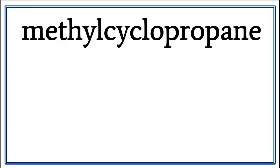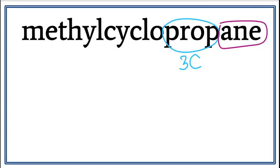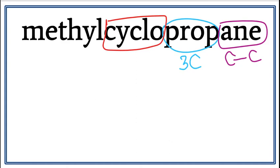Let's draw the structure for methylcyclopropane. 'Prop' tells us that there are three carbons in the longest carbon chain. 'Ane' tells us that this is an alkane, meaning that there are only single bonds between carbons. We see the word 'cyclo,' meaning these carbons are arranged in a ring. Every time you see 'cyclo,' you have to draw a ring. We have three carbons arranged in a ring, and when we draw three carbons in a ring, we end up with a triangle.